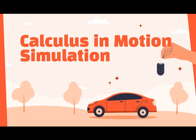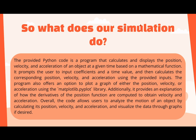Calculus and Motion Simulation — a simulation created by Virginia International Private School students. This Python code calculates and displays position, velocity, and acceleration based on the user's input. It uses a mathematical function and prompts for a coefficient and a time value. The program computes the corresponding values, offers the option to plot graphs, and explains how derivatives are used to obtain velocity and acceleration. This code enables analysis of object motion, calculation of position, velocity, and acceleration, and optional data visualization through graphs.